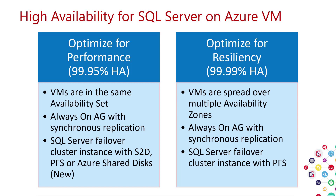For high availability of SQL Server on Azure VMs, there are two approaches: optimize for performance, which yields about 99.95% availability, or optimize for resiliency, which gets up to 99.99% availability. Both are HA strategies with tradeoffs. If you want that last 0.04%, you go through the optimize-for-resiliency path.